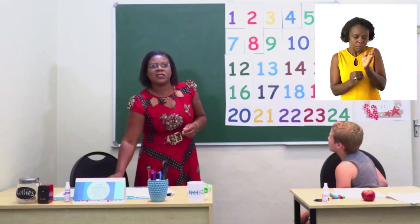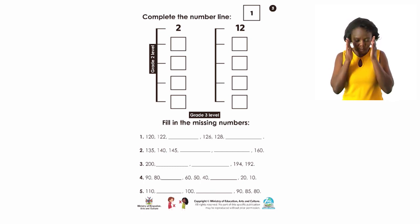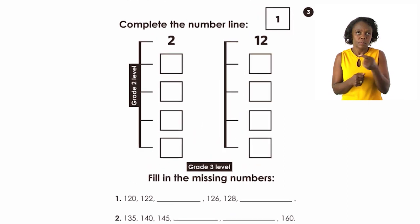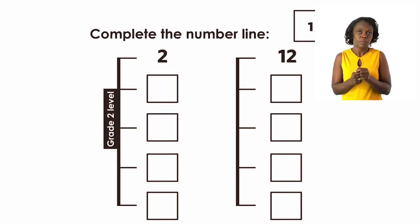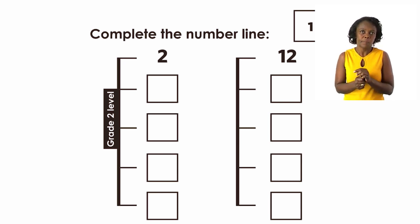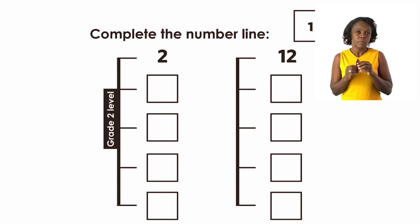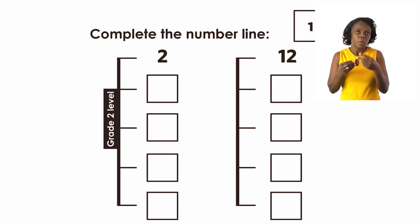Now let's look at page 3 and see what we can do there. We are going to focus on the top exercise for the grade 2s, but the grade 3s as well you are most welcome to listen because you are doing this for your revision. So grade 2s, I would like you to complete the number lines. Starting with 2, the first number line — what will be the next number? 4 of course. So skip one number, write in the box, and finish that one.